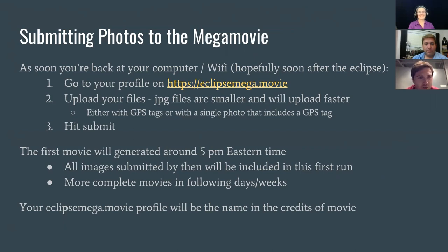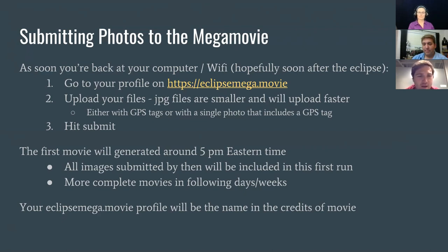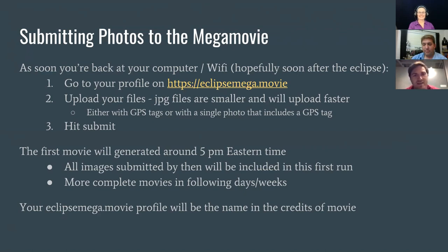Once we get your files with the GPS tags, go ahead and submit the photos. We'll generate the first movie a couple of hours after the eclipse finishes on the East coast — we're shooting for around 4 to 5 PM Eastern time. We'll run the stitching and alignment algorithm with as many pictures as we have at that point. Over the coming days and weeks, we will continue to run that algorithm and slot in new photos as more people trickle out of the field and get a chance to upload.